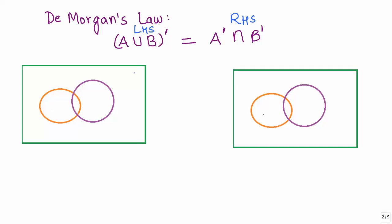Let us say that this is the universal set U, the orange circle is set A, and this is set B. Now let us first take care of the left-hand side. We need to compute A union B. A union B simply means combining both sets A and B. I'll use the light green color to show this part — this represents A union B.